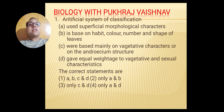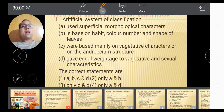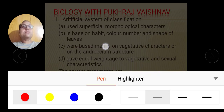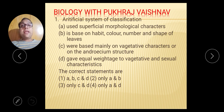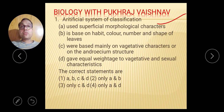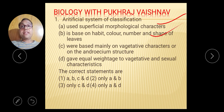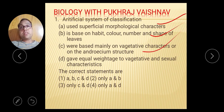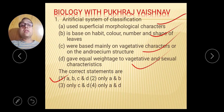The first question: Artificial system of classification. There are four statements. A: Used superficial morphological character — this is a right statement about the artificial system. B: It is based on habit, color, number and shape of length — again a right statement. C: Work based mainly on the vegetative character — again right. D: Give equal weightage to vegetative and sexual — again right. So the right option for question number 1 is A, B, C, D — all statements are correct with respect to the artificial system of classification.